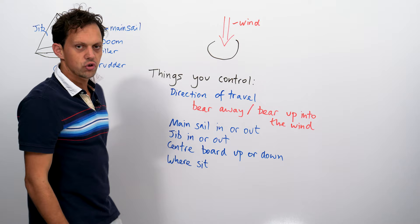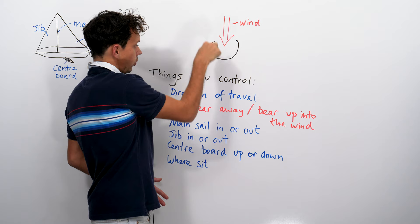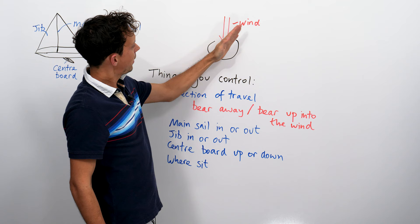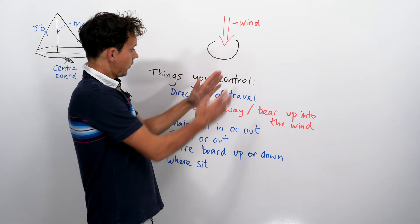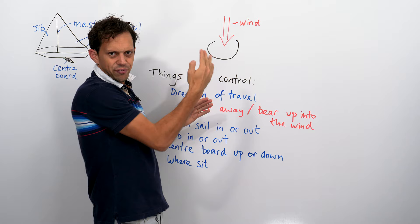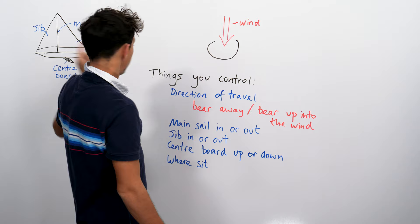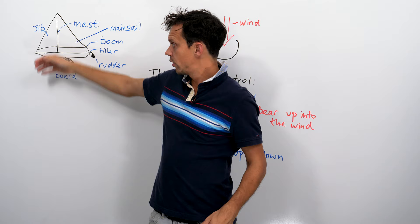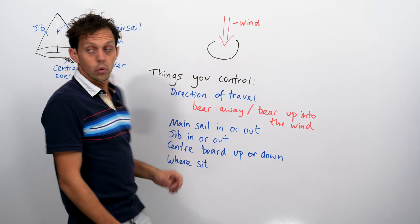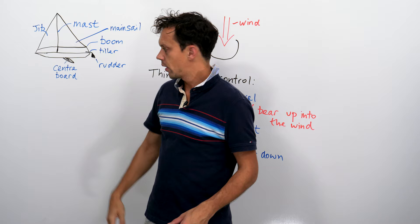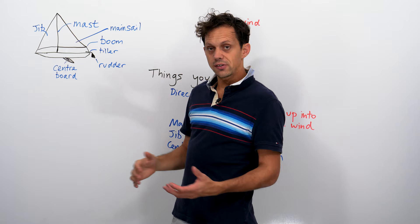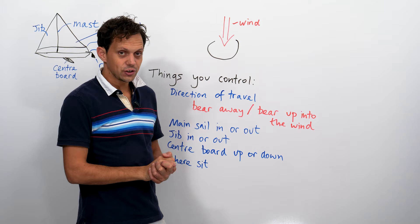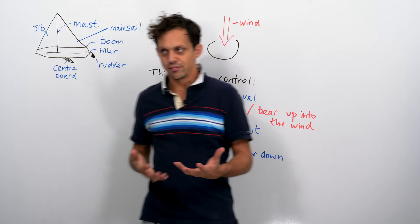So what can you control on a boat? Well, you control which direction you are going in. It's called bearing away or bearing up into the wind. You can control this mainsail, whether it's close or far out, and to have that just in the right place will affect the speed of the boat. You also will control whether the jib is in or whether you're going to let it further out, depending on the wind direction. The centre board can be all the way down into the water, or you can lift it up. I'm not going to explain why, it's complicated. And you can control where you sit, to help with the balance of the boat. So that, in a nutshell, is the basic idea of sailing.